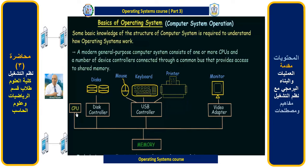The CPU along with these controllers are all connected via a common bus, represented by this line in the diagram. They are all connected to this bus, which is common to all of them, and that bus is connected to shared memory. Let us see about this in more detail.